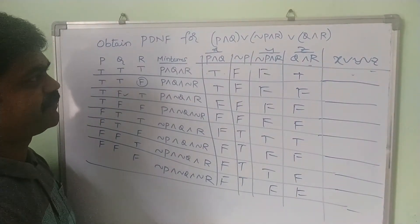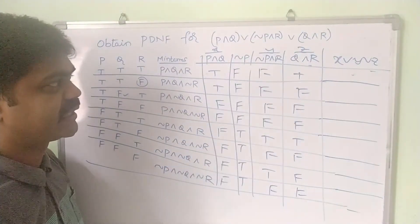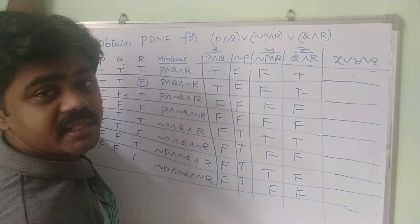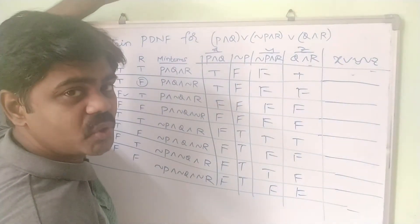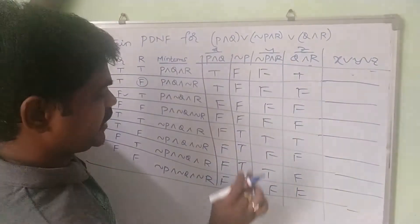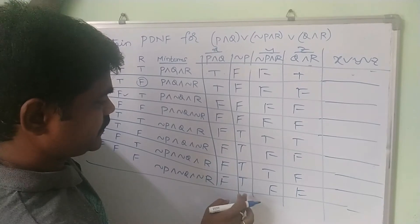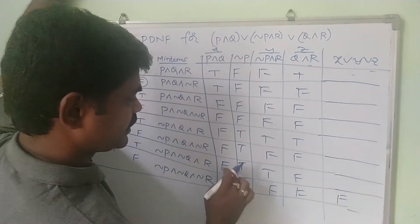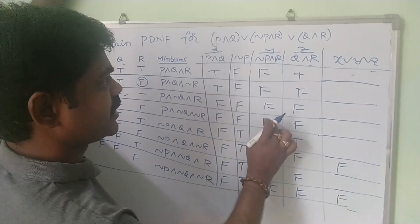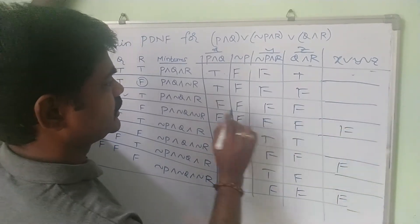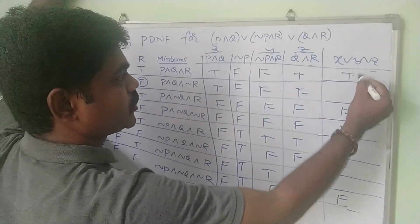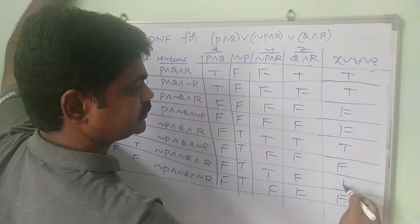For X∨Y∨Z: if any one of X, Y, Z is true, the result is true; only if all three are false is the result false. The rows where all three are false yield false output; all remaining rows yield true.